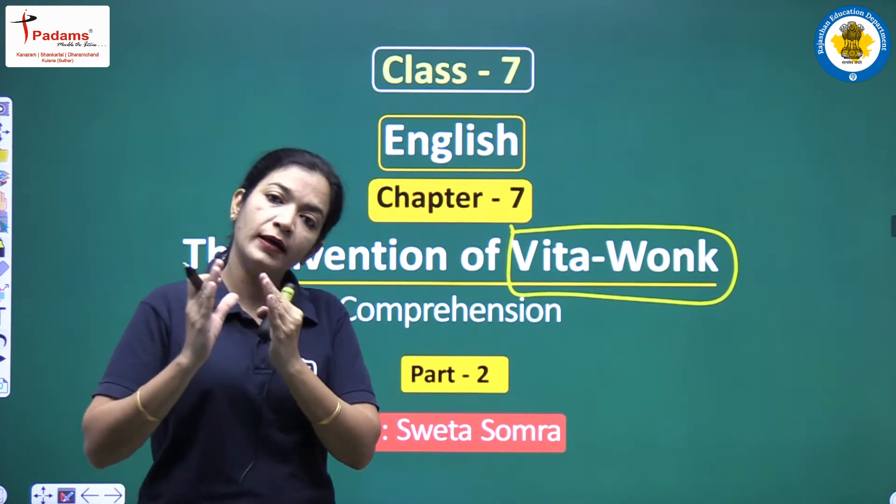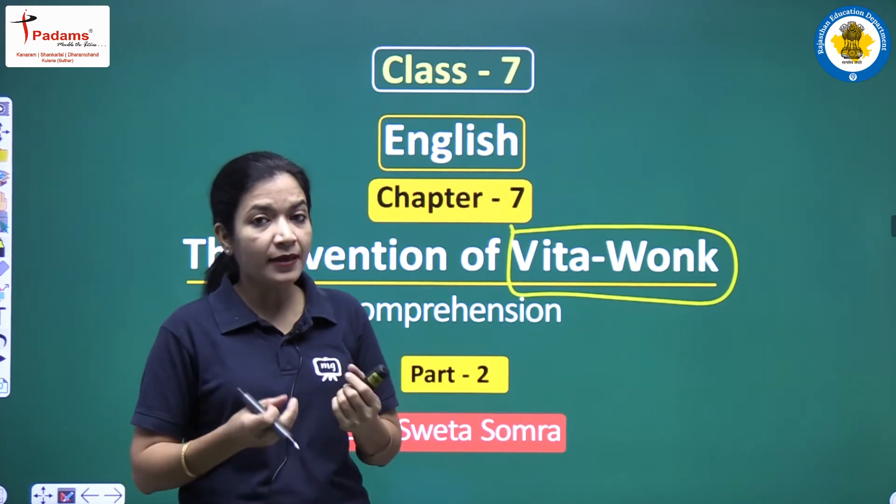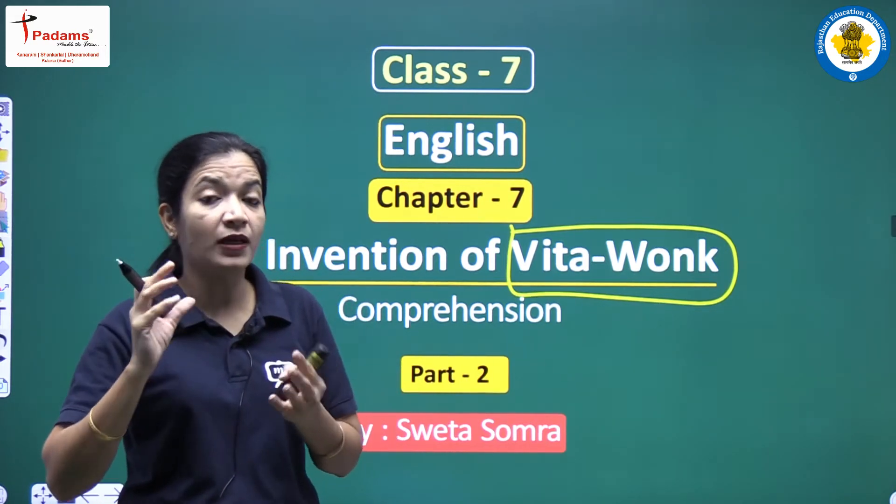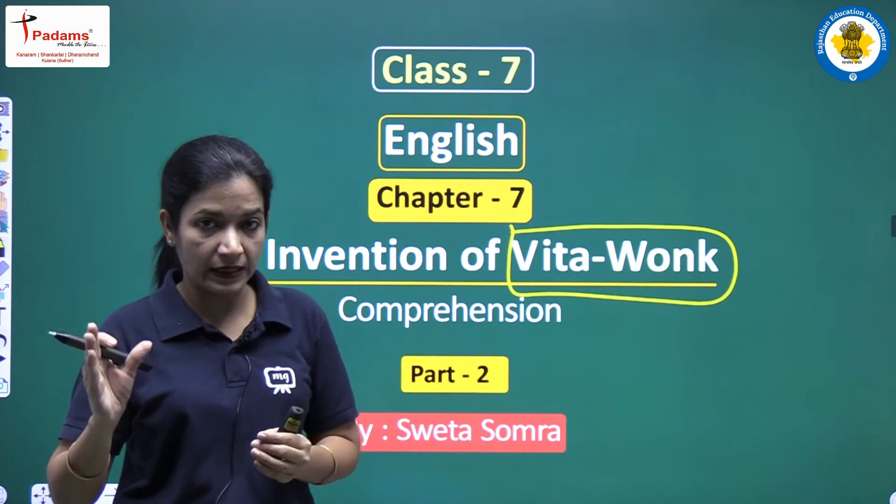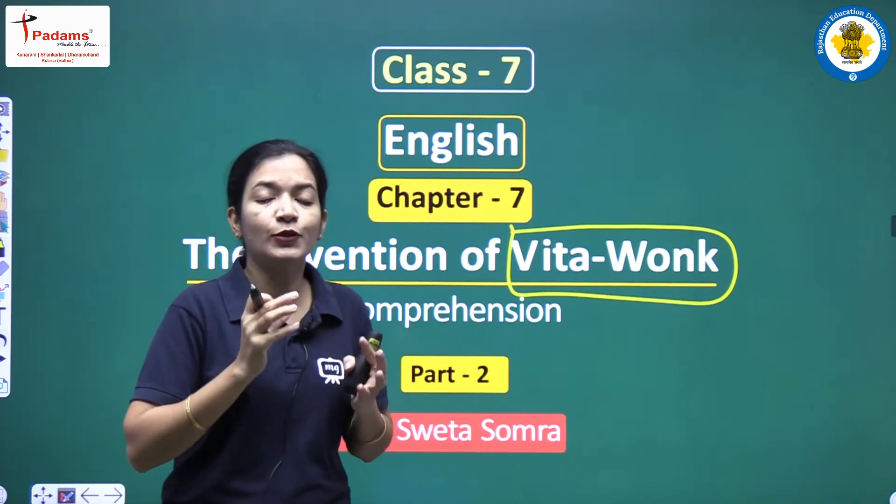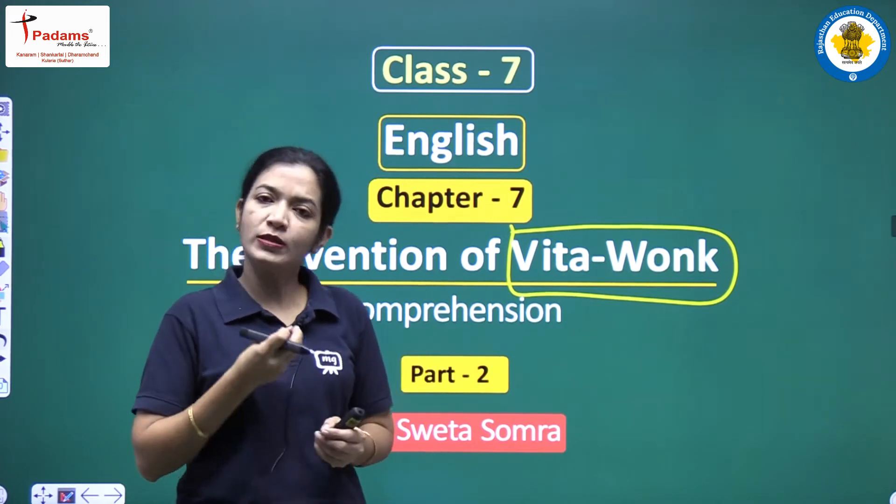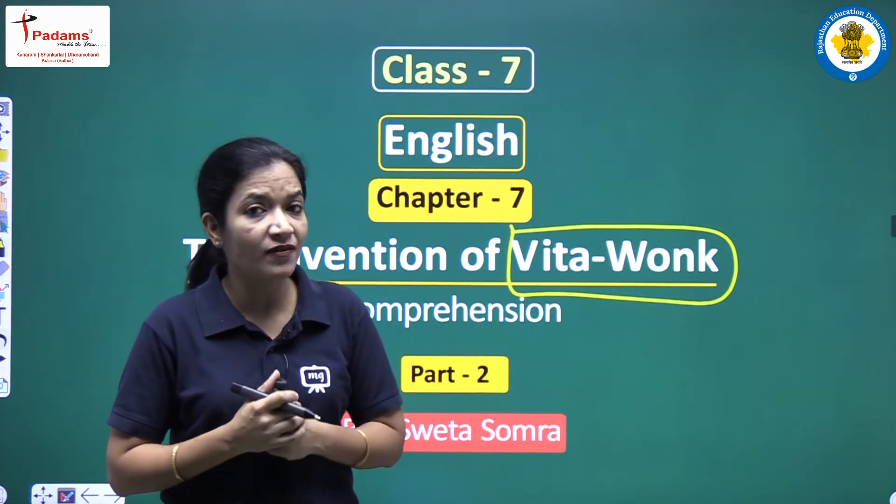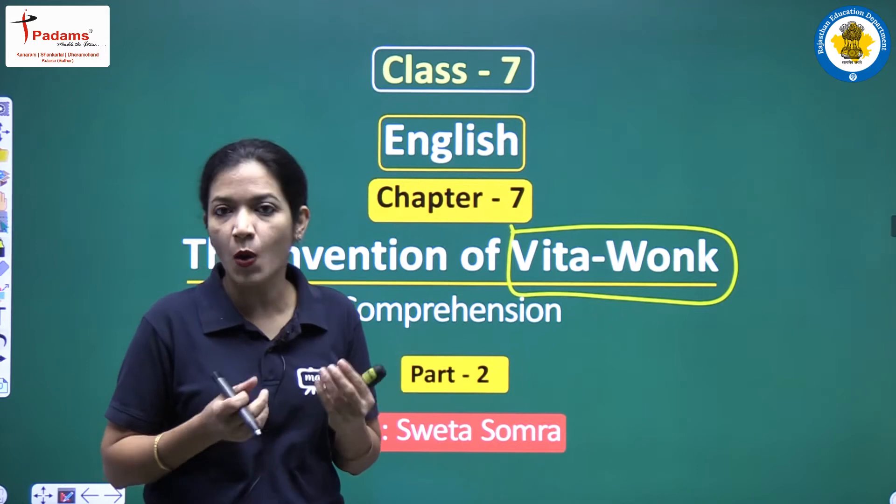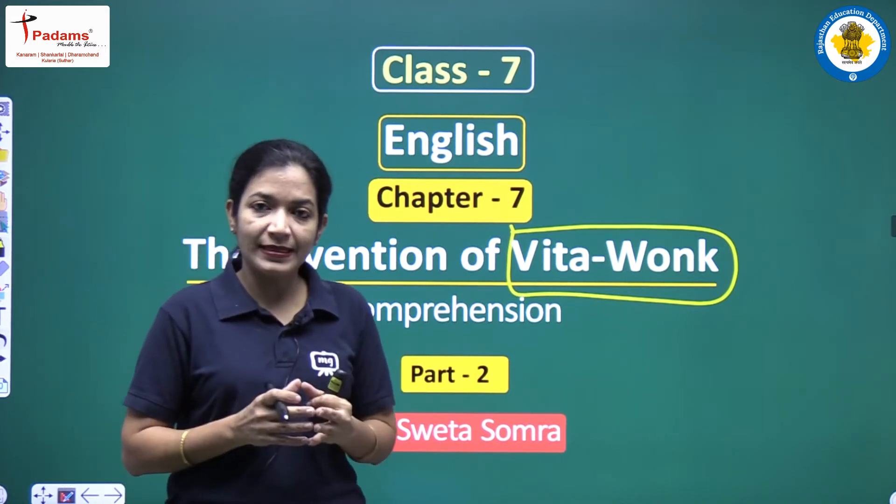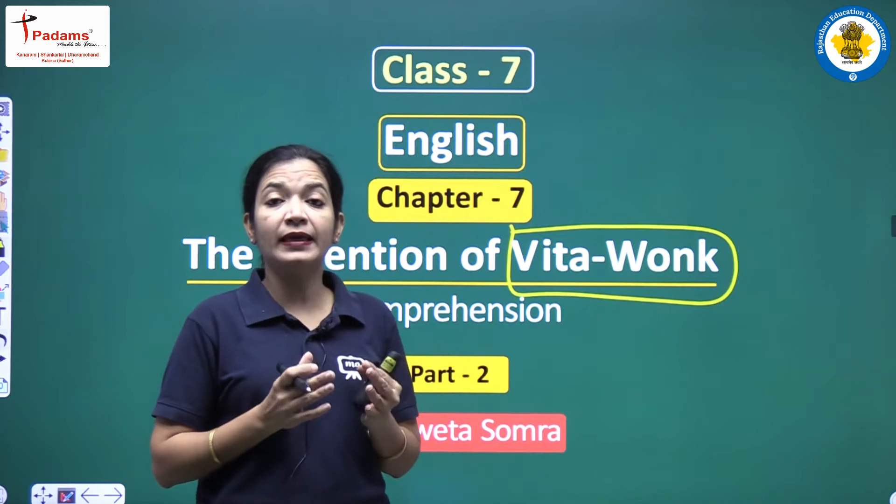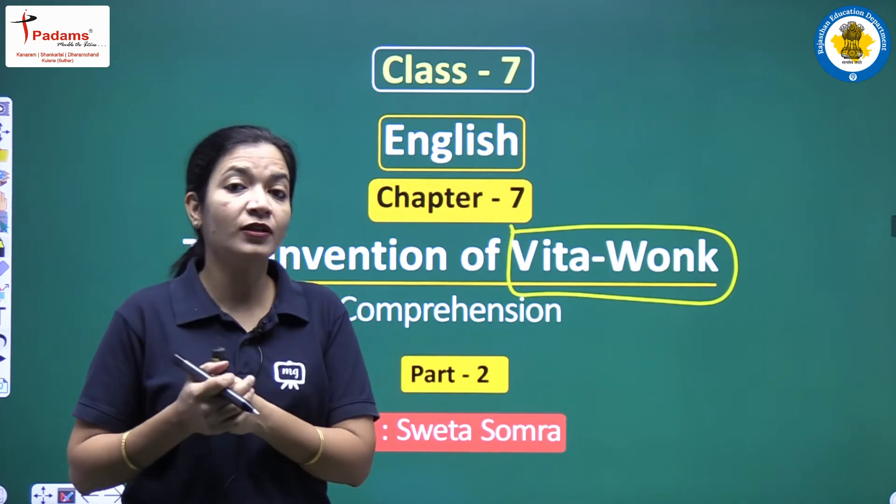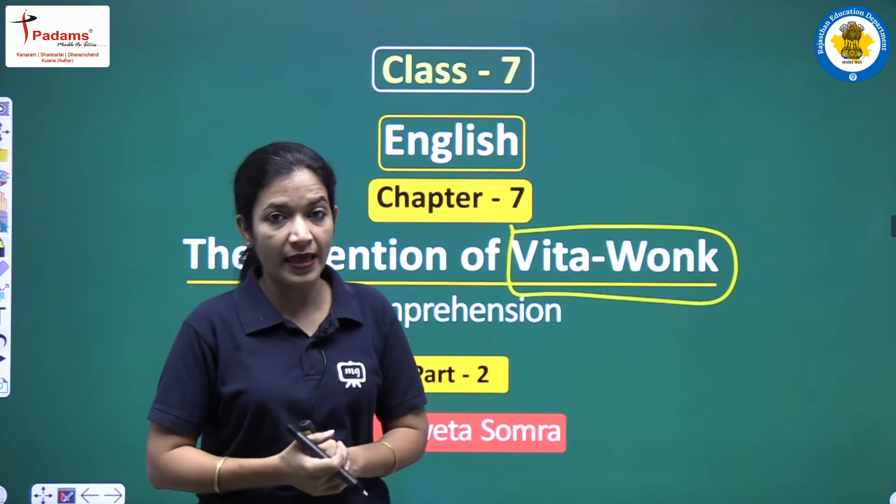He invented something by drinking that particular thing, which was named Wonka White, people used to grow younger. Uski ek si pite hi log jawan ho jate the. But that was very very strong. It was so strong that with just a few drops, a person's age could go into minus years. People used to become even of minus years of age.